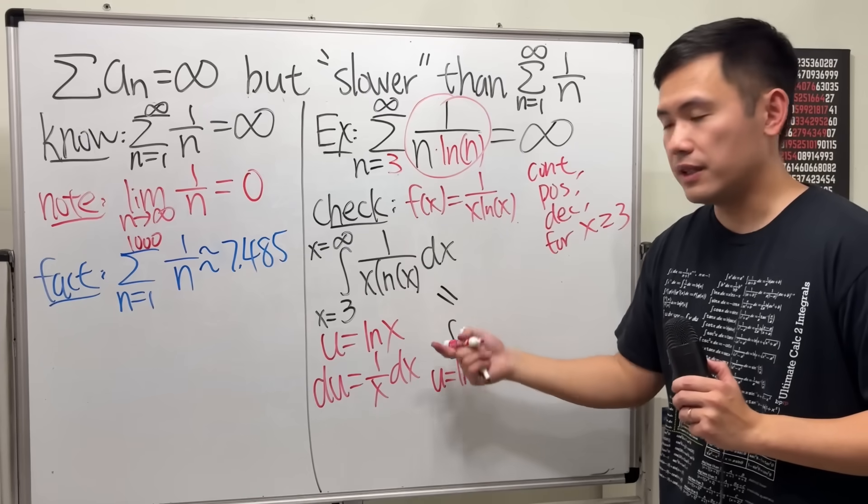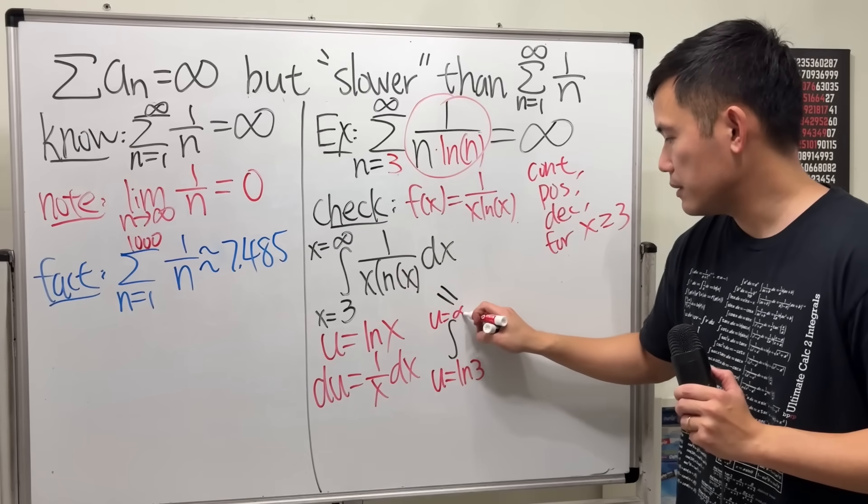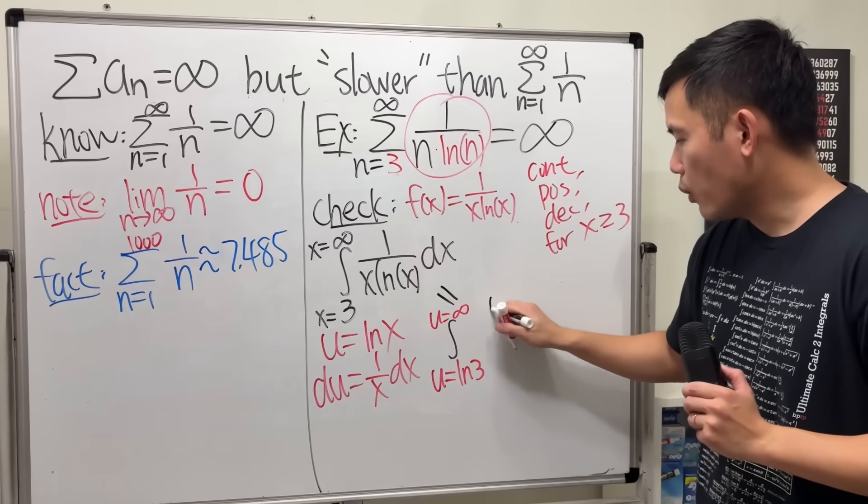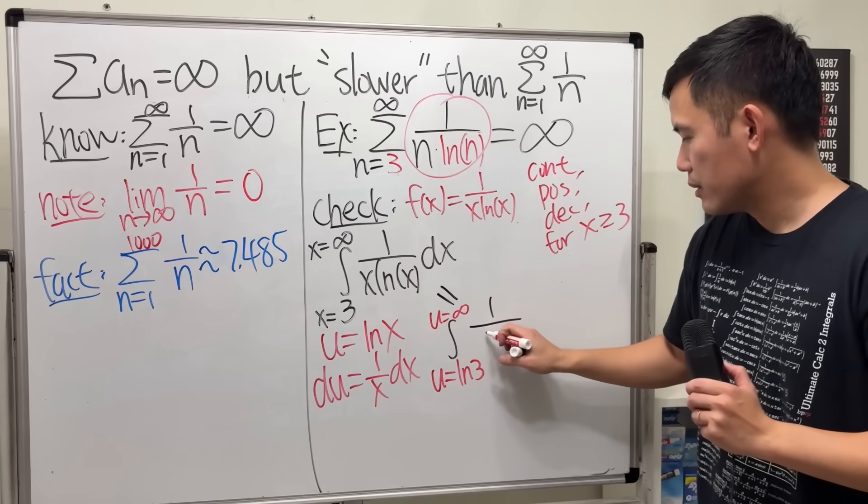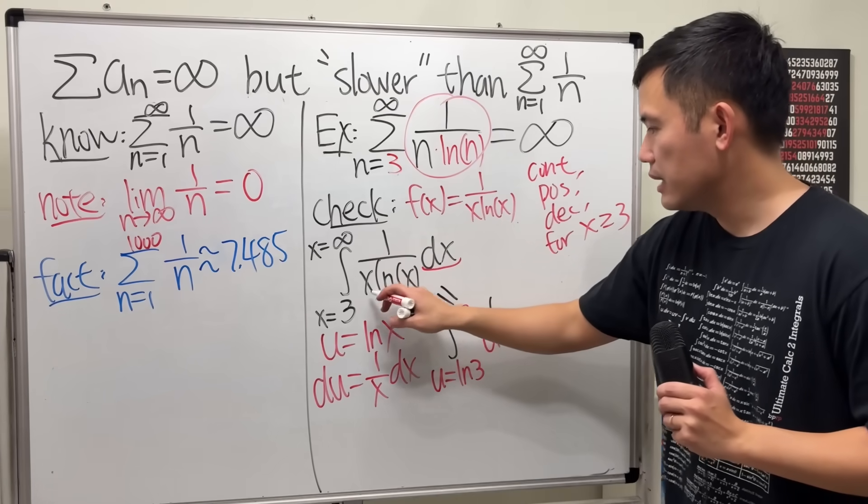And then we have 1 over, it's just u here now because this and that together gives us the du.